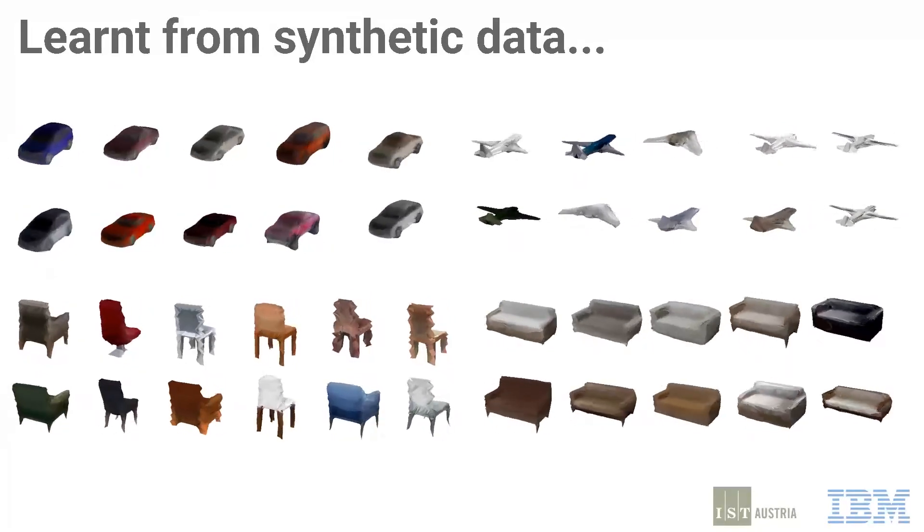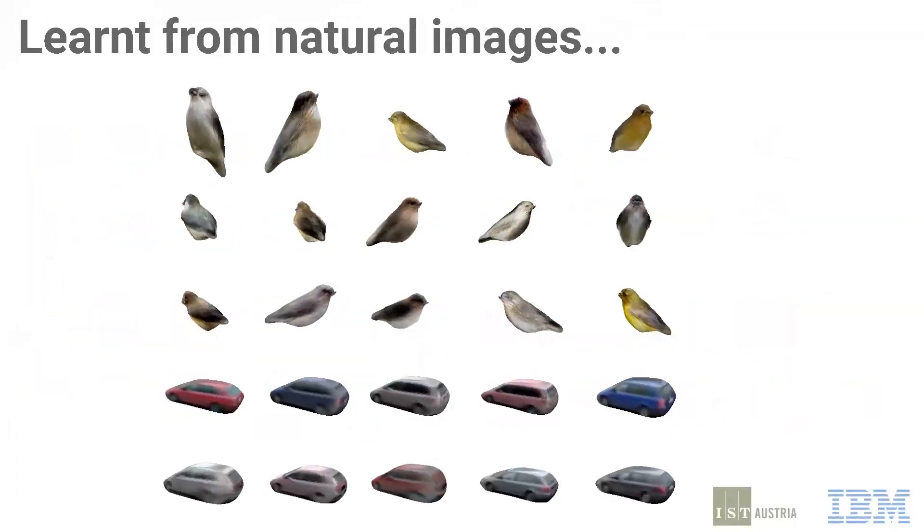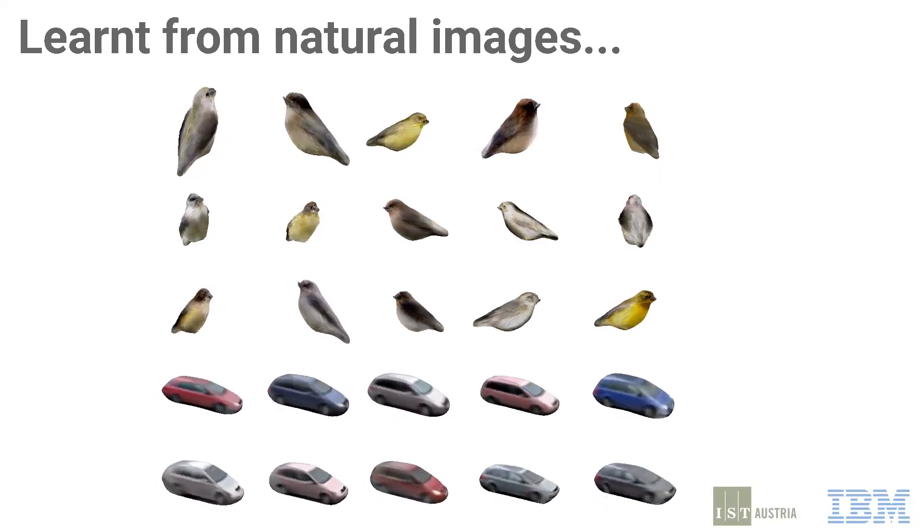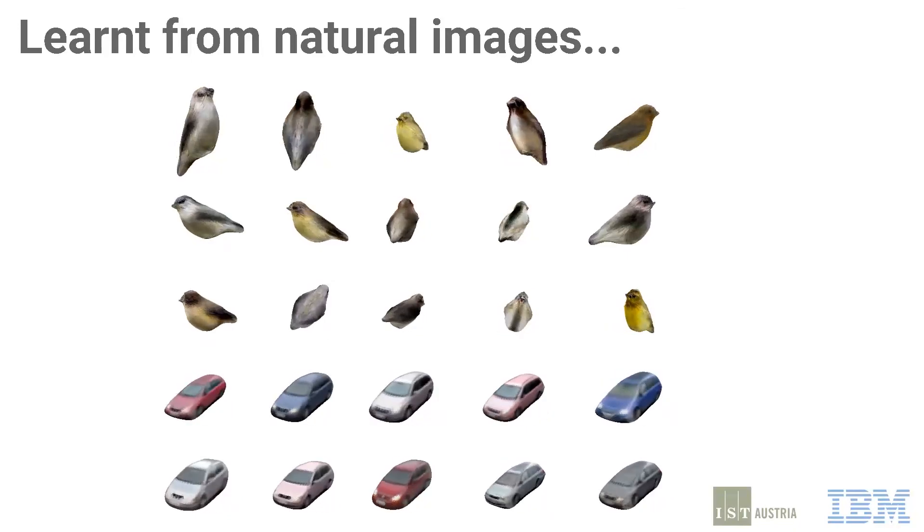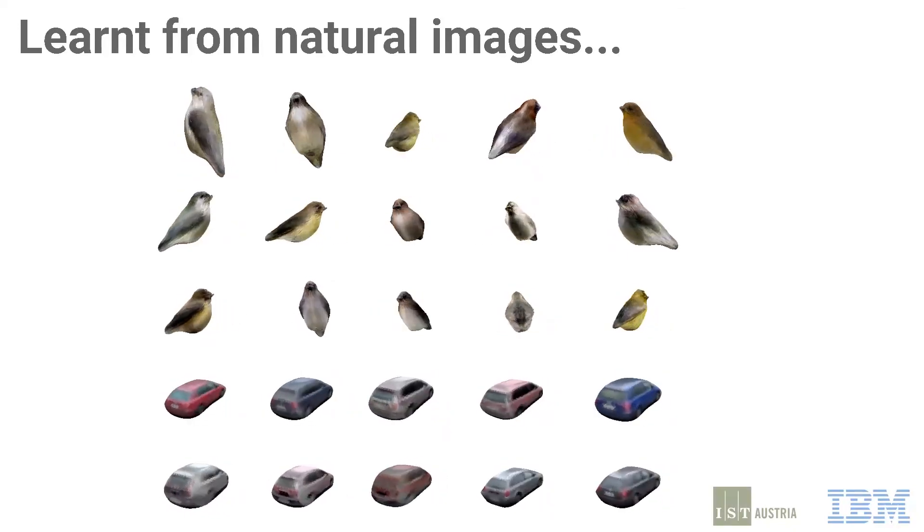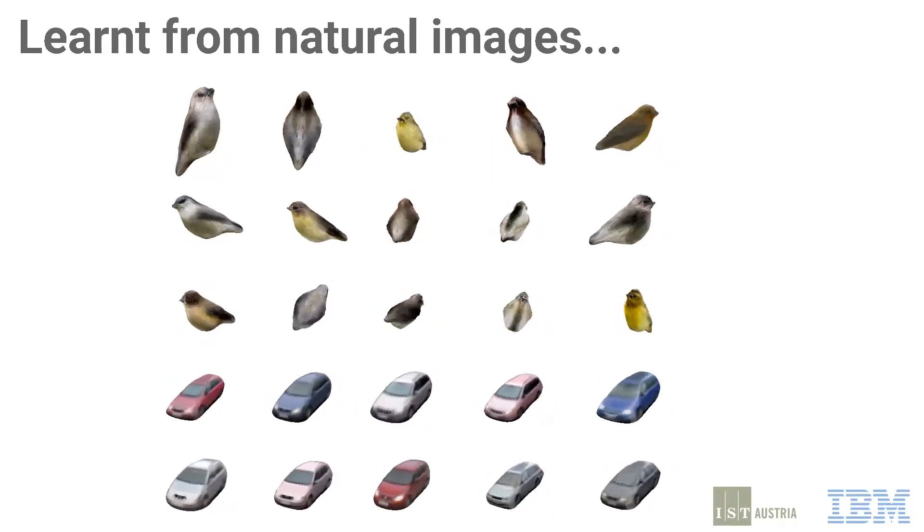We also test on two natural image classes, birds from the CUB dataset and cars from the BrunocomSpeed dataset. Again, our model generates plausible and diverse samples for both classes. Thank you for listening.